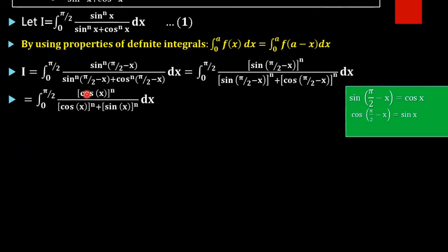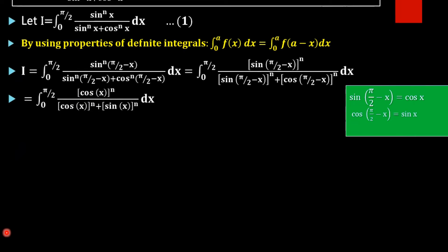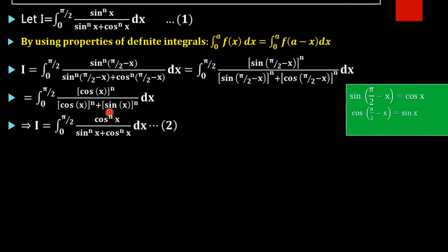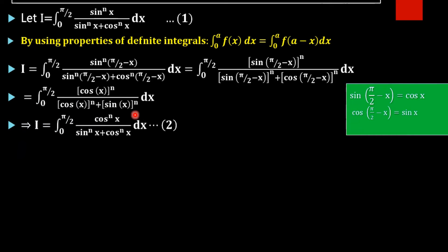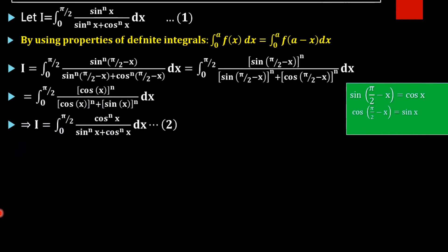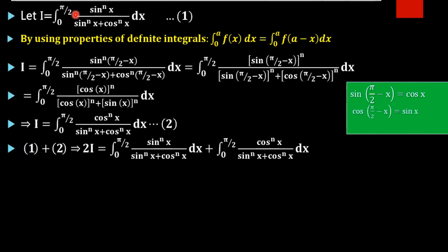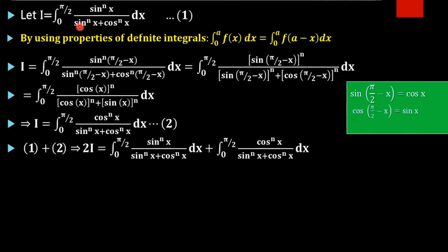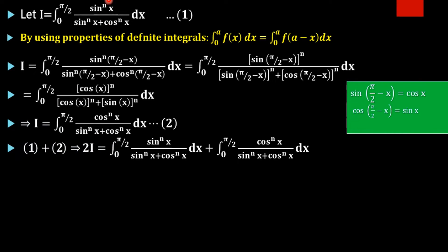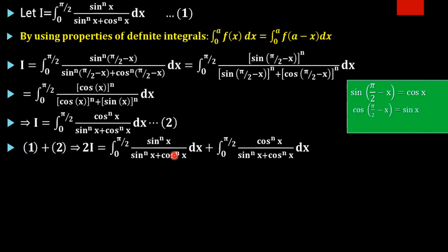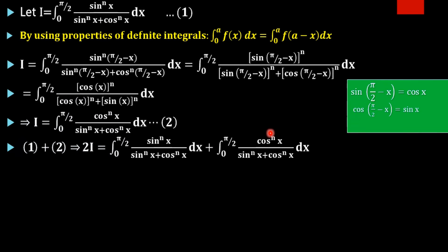This can be rewritten as cosⁿx divided by sinⁿx plus cosⁿx dx, where sin(x) whole raised to n is sinⁿx and cos(x) whole raised to n is cosⁿx. This is equation 2. Now, adding equation 1 and equation 2 gives 2I, that is: integral from 0 to π/2 of sinⁿx divided by sinⁿx plus cosⁿx dx, plus integral from 0 to π/2 of cosⁿx divided by sinⁿx plus cosⁿx dx.